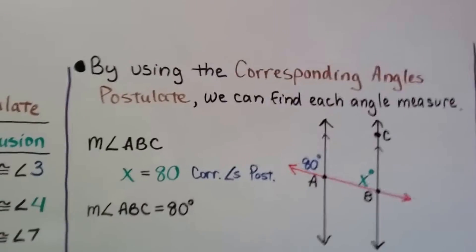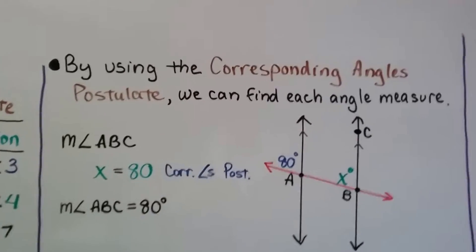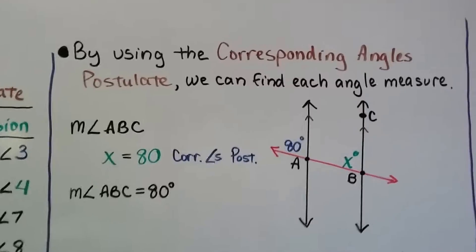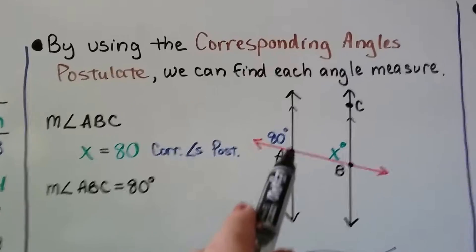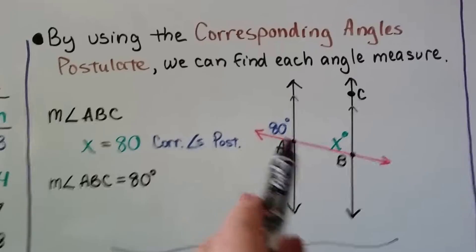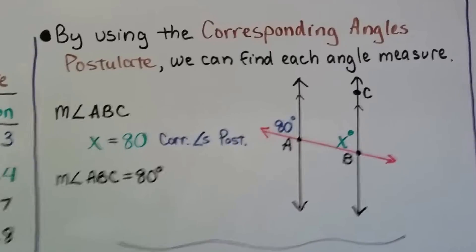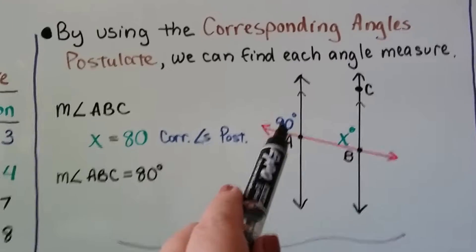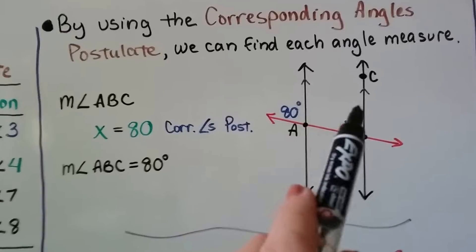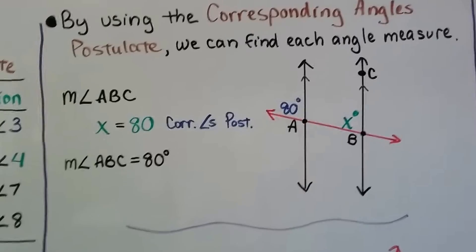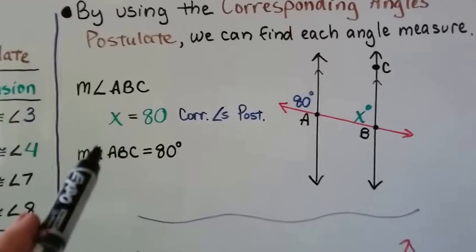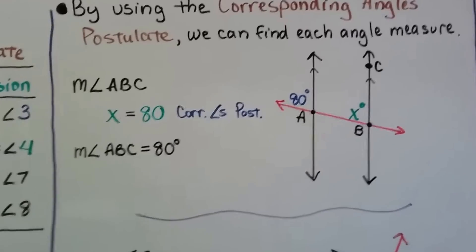By using the corresponding angles postulate, we can find each angle measure. To find the measure of angle ABC, let's find where that is — we've got point A, point B, and point C, so that angle is X. This known angle is 80 degrees. Both angles are above the transversal and on the left side of the lines, so by the corresponding angles postulate, angle ABC is also 80 degrees.